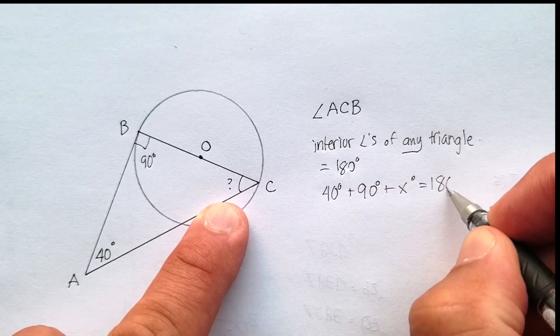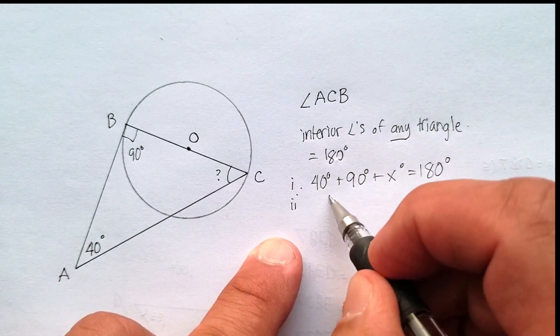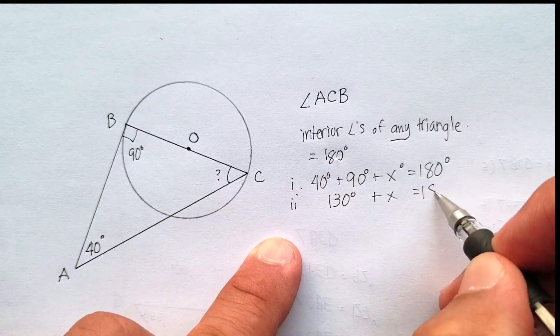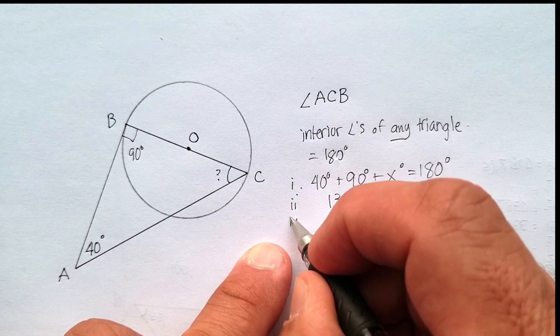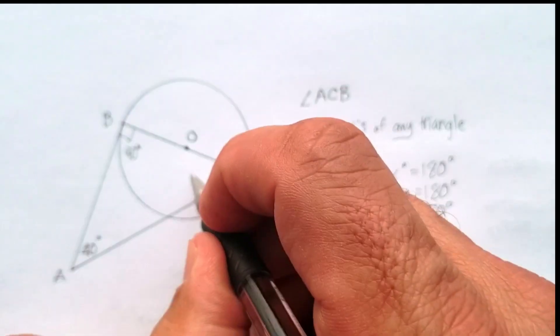And that should equal 180 degrees. This will be equal to 130 plus X equals 180. Subtract 130 from both sides. And you should get X is equal to 50 degrees.